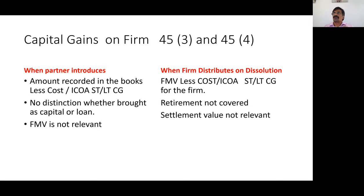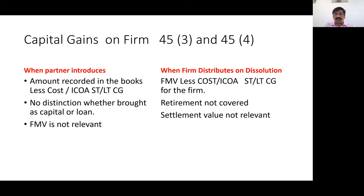The main reason 45-3 and 45-4 exist is that generally a partnership firm and its partners are not treated as different entities — they are the same. So it is possible to start a firm, transfer your assets there, and then receive those assets back as a settlement of accounts by way of capital discharge. Sections 45-3 and 45-4 are there to prevent this.